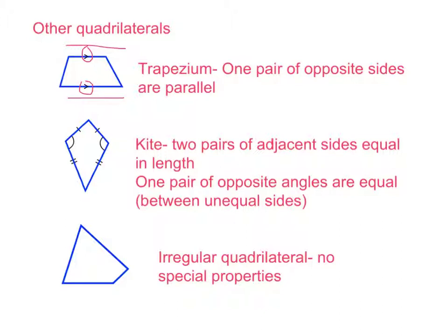A second type of quadrilateral is a kite. A kite has two pairs of adjacent sides — adjacent means next to each other — that are equal in length. This side here is next to this side here. We know these sides are equal in length because they're annotated with two lines, and these adjacent sides are equal in length because they're annotated with one line. The other property of a kite is that one pair of opposite angles are equal — these opposite angles are between the unequal sides. These angles are opposite one another and both equal, because they have the same one annotation on each. So: two pairs of adjacent sides are equal in length, and two opposite angles are equal.